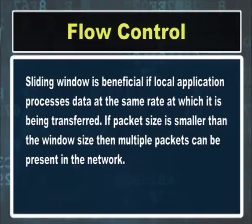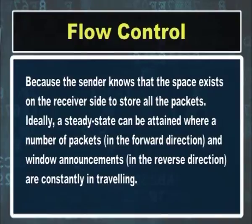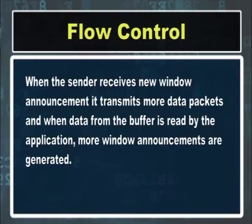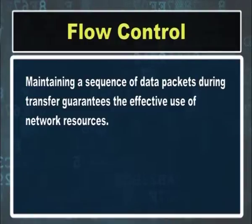Sliding window is beneficial if the local application processes data at the same rate at which it is being transferred. If packet size is smaller than the window size, multiple packets can be present in the network because the sender knows that space exists on the receiver to store all the packets. Ideally a steady state is attained where packets in the forward direction and window announcements in the reverse direction are constantly travelling. When the sender receives a new window announcement it transmits more data packets, and when data is read by the application, more window announcements are generated. Maintaining a sequence of data packets during transfer guarantees effective use of network resources.